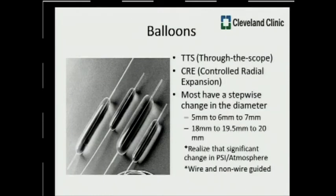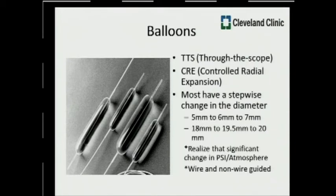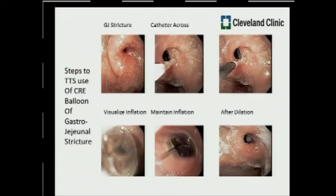Looking at the different balloons available, the most commonly used are TTS — through-the-scope — balloons, essentially CRE balloons with a stepwise change in diameter. The smallest balloons go from 5 to 7 millimeters sequentially, up to larger balloons from 18 to 20 millimeters. These are typically used for the pylorus or esophageal area, not for achalasia. There is a significant change in PSI or atmospheric pressure with each incremental increase, and these can be wire-guided or non-wire-guided.